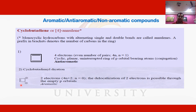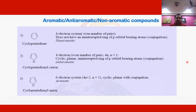Similarly, taking cyclobutadiene dication, there is only one pi bond meaning two pi electrons. When we apply Hückel's rule we get n = 0, an integer, so it follows the 4n+2 rule. Due to the presence of two positive charges at two corners of the ring, delocalization of these two pi electrons can occur over the ring, forming a continuous pi electron cloud. Therefore cyclobutadiene dication is considered aromatic.